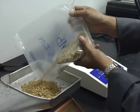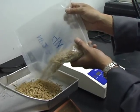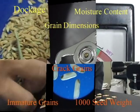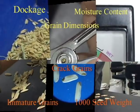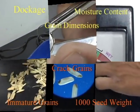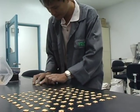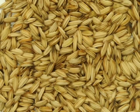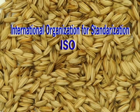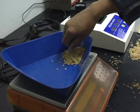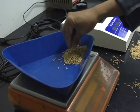When measuring the physical quality of paddy, there are six features to examine: cracked grains, grain dimensions, immature grains, dockage, 1000 seed weight, and moisture content. Paddy will be classified based on the International Organization for Standardization, or ISO, for paddy. This international standard lays down the minimum specifications for husk rice.